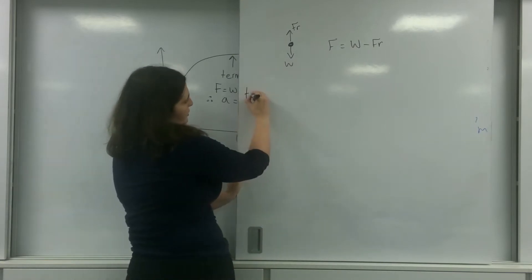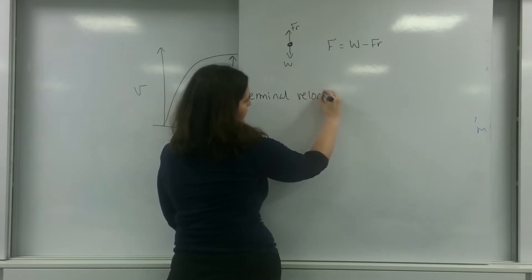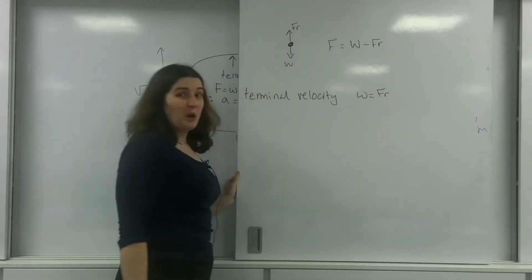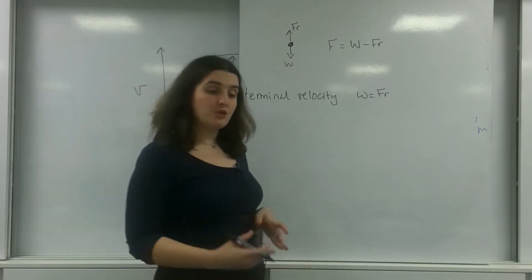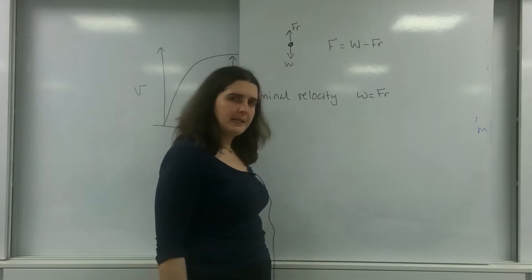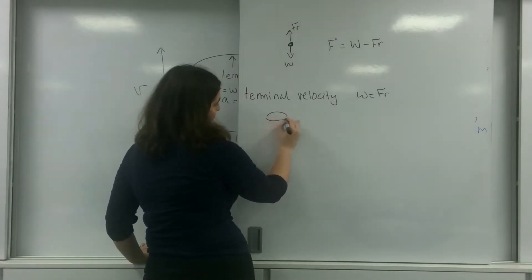When he reaches terminal velocity, when the weight equals the friction, he's still going quite fast. And what you need to do is try and address that balance. And you don't really want to be hitting the ground at a really high speed. So you open a parachute here.